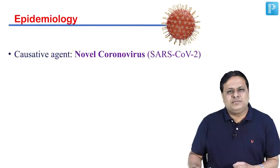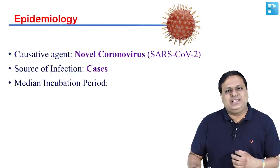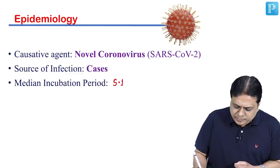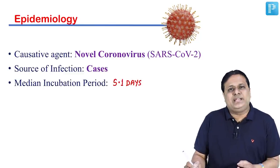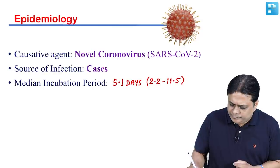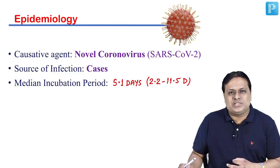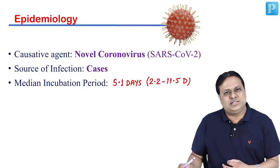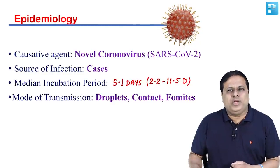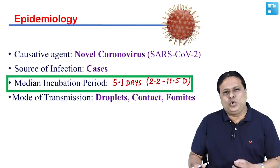SARS-CoV-2, earlier known as novel coronavirus — the source of infection has been found to be cases. The disease has a median incubation period of 5.1 days, with a range from 2.2 to 11.5 days; in some places up to 14 days has been reported. This disease transmits as a droplet, contact, or fomite-borne infection. Take-home point: median incubation period is 5.1 days, ranging from 2 to 12 days.